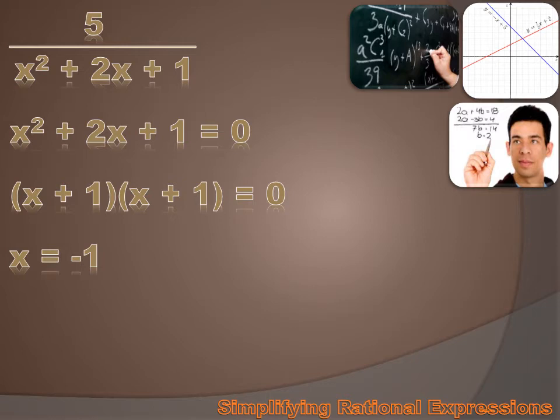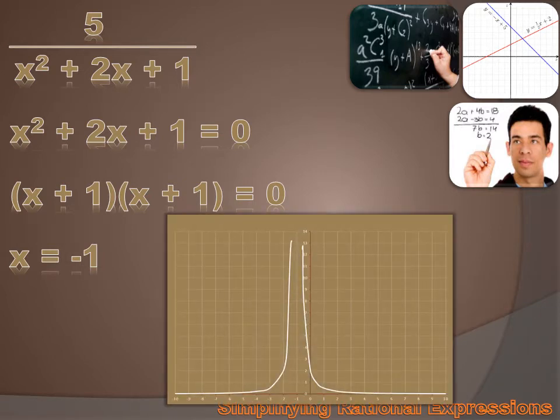Now if we graph this rational expression 5 over x squared plus 2x plus 1, it looks just like this. And when x equals minus 1, is there a y value? No. x equals minus 1 is the asymptote. The curve approaches minus 1 but never reaches it.